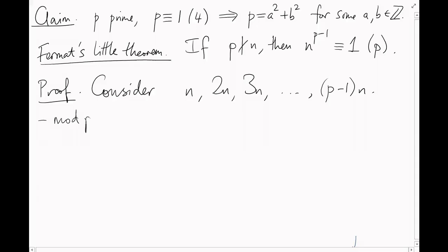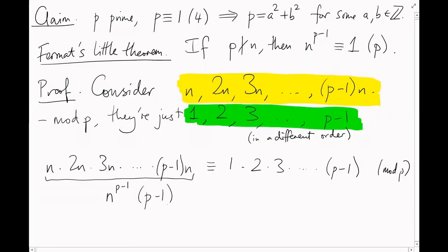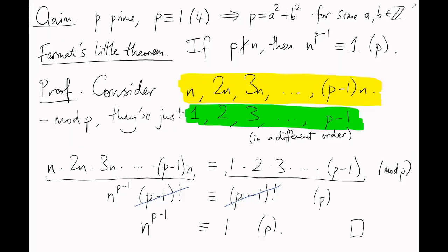So, modulo p, the numbers n, 2n, and so on up to (p-1)n are just the numbers 1, 2, up to p-1, maybe in a different order. That means the product of these numbers is equal to the product of these numbers mod p. In other words, n to the (p-1) times (p-1) factorial equals (p-1) factorial mod p. But now we can just cancel a factor of (p-1) factorial from both sides, and we get our result. That proves Fermat's little theorem.